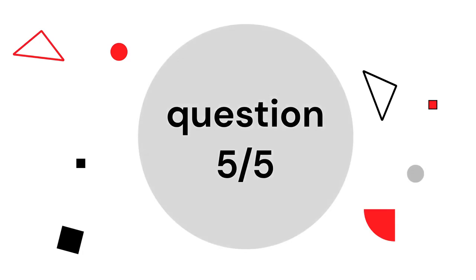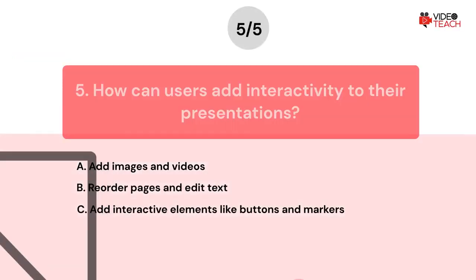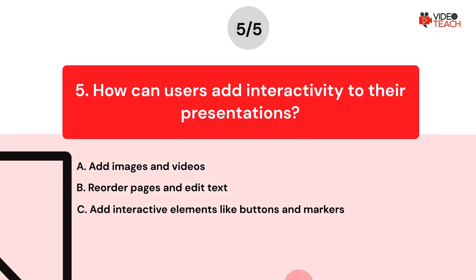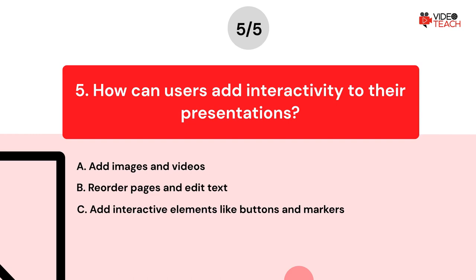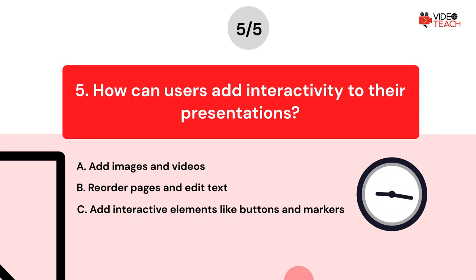Question number five. How can users add interactivity to their presentations? Option A: Add images and videos. Option B: Reorder pages and edit text. Option C: Add interactive elements like buttons and markers. Now you have about 15 seconds to think about your answer.